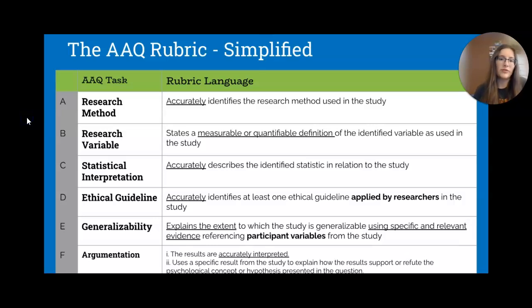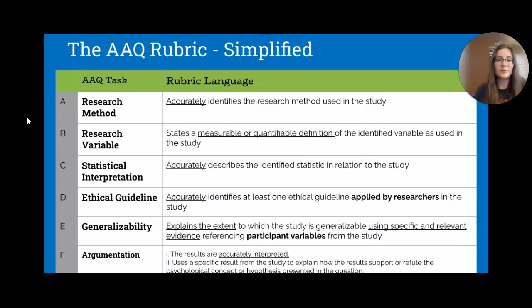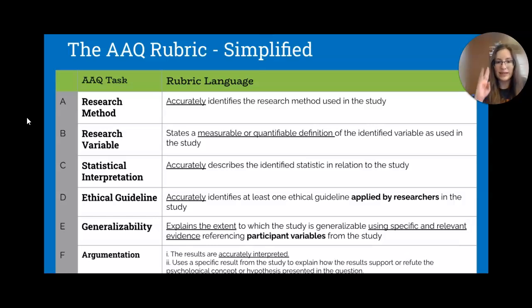Looking at the rubric for the AAQ, here's a simplified version. For Part A on research method, you simply need to accurately identify which method is used — experiment or correlational study, and possibly a case study, though experiment or correlation is most likely. For Part B, you must provide a measurable, quantifiable operational definition of the identified variable. For Part C, it's an interpretation of a specific statistical value accurately relating it to the study.